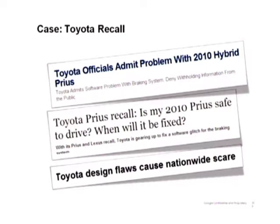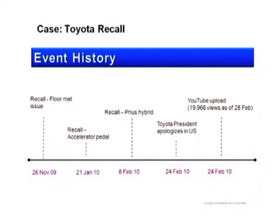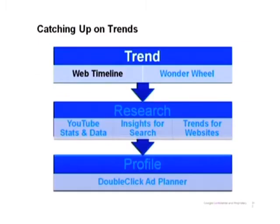Recently, there's been a lot of news about the Toyota Prius recalls. Our Mr. X is in the industry — he's very interested and frankly a little concerned. He hears about these things but doesn't know how important they are. He looks at the events that have happened: over the last two months especially, a lot of things about floor mats and gas pedals going wrong, and everyone's getting really nervous. So Mr. X starts by trying to identify the trend. We have two tools: Web Timeline and Wonder Wheel, and both can be accessed from your Google Search Results page.